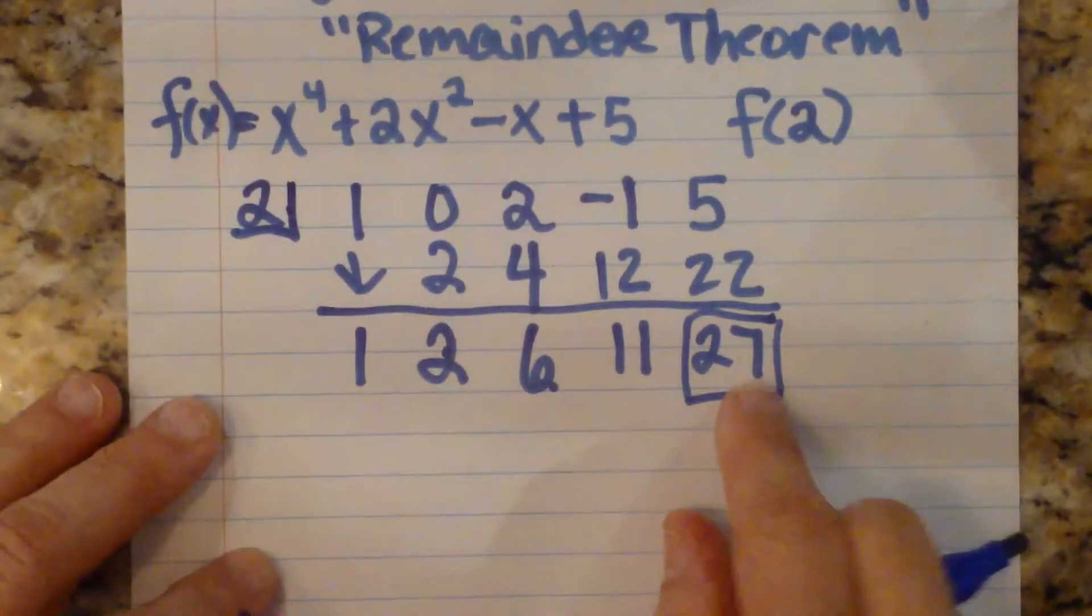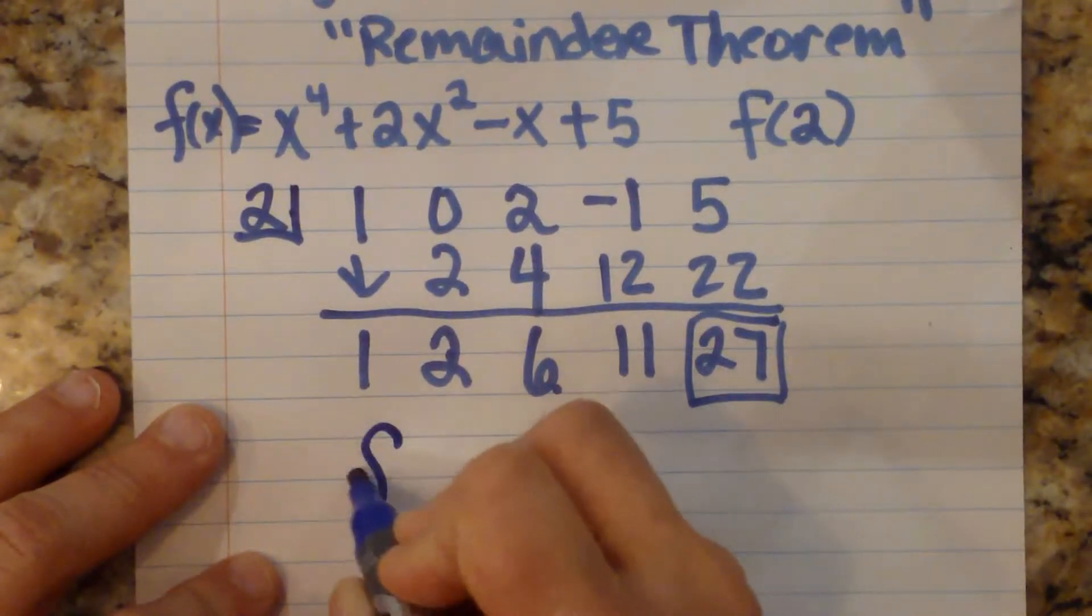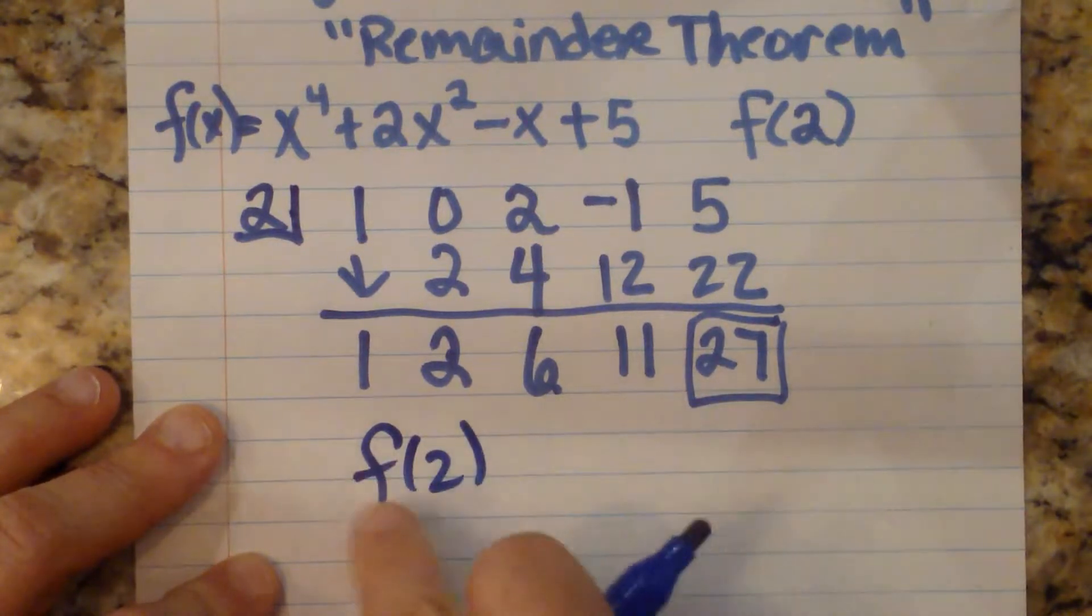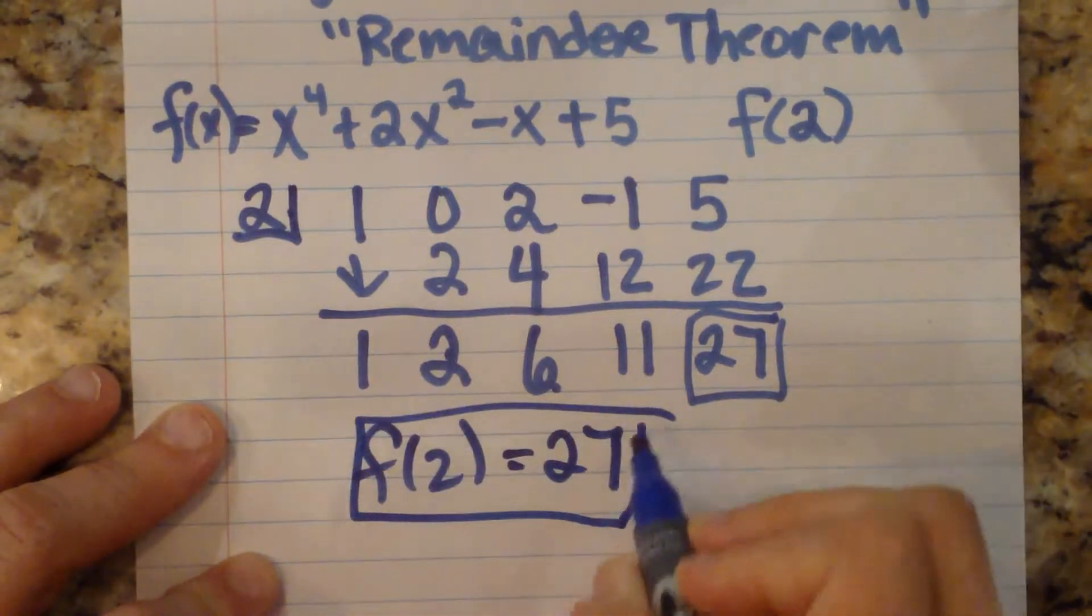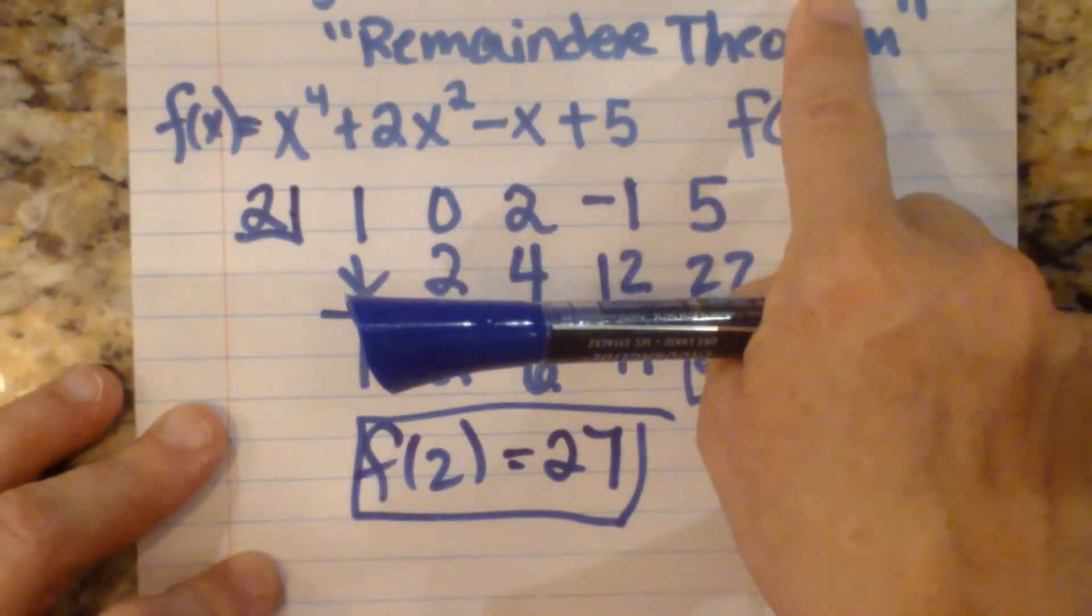So how would we write that in function notation? Well, you would say f of 2. So the function evaluated at 2 is equal to 27. And that is how you synthetically substitute.